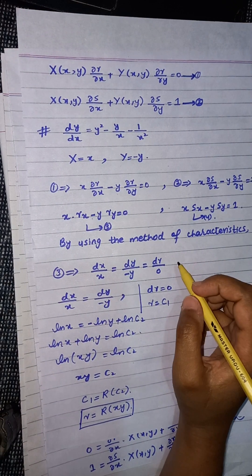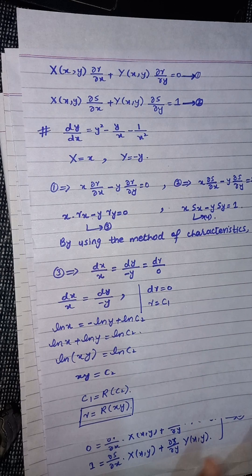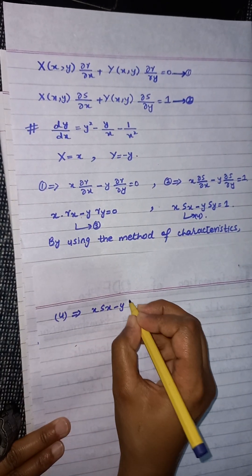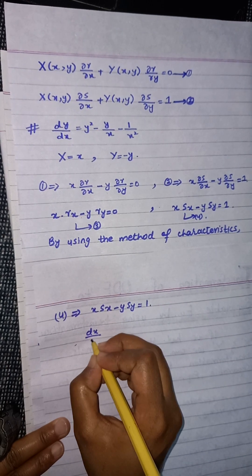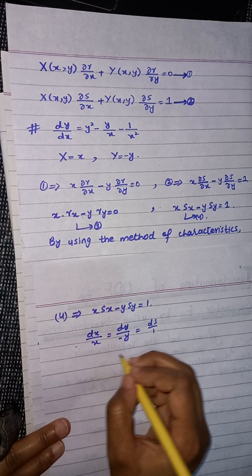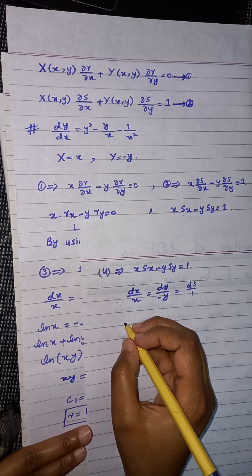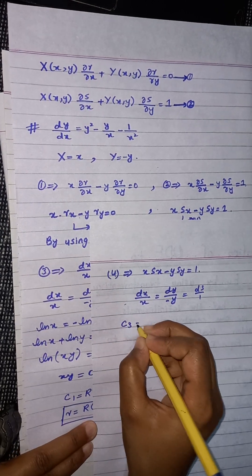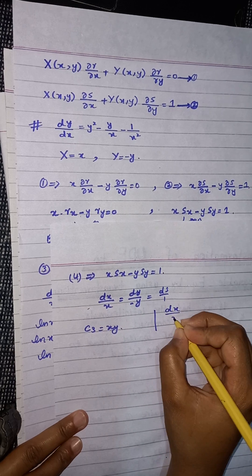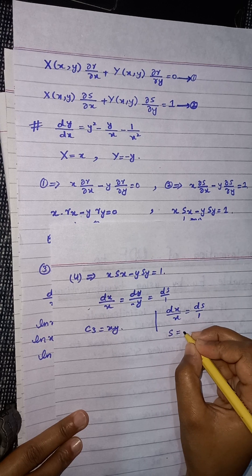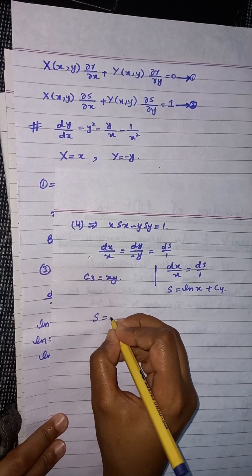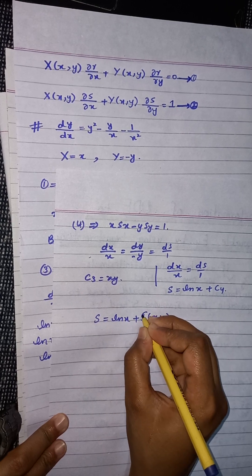Similarly, for equation number four, x·s_x minus y·s_y equals one, we write dx/x equals dy/(−y) equals ds/1. Solving the first two terms gives c₃ equals x·y, as before. Using the first and last pair, dx/x equals ds/1, we get s equals ln(x) plus c₄. Simplifying further, s equals ln(x) plus s(xy), where s(xy) is some arbitrary function.